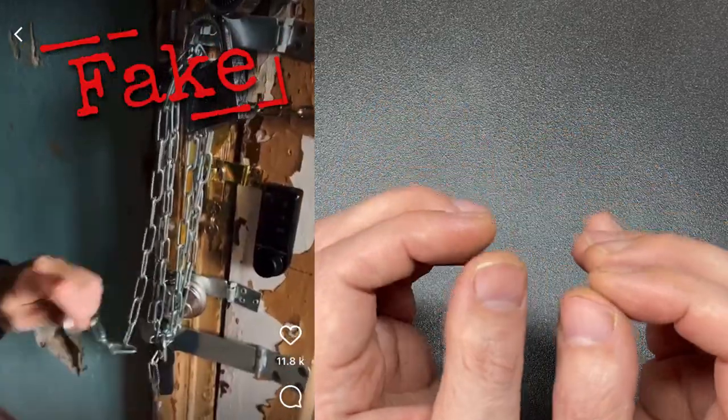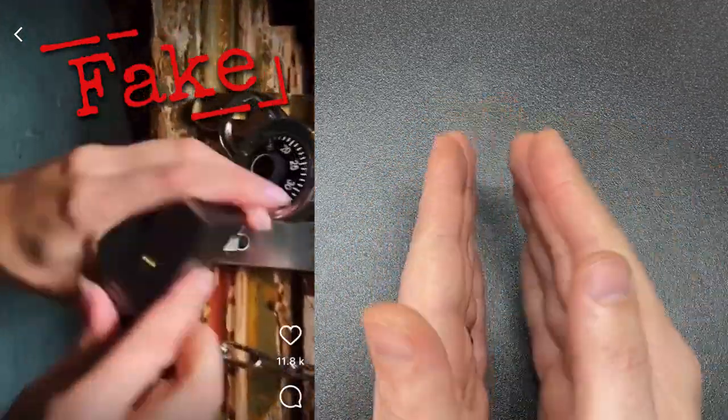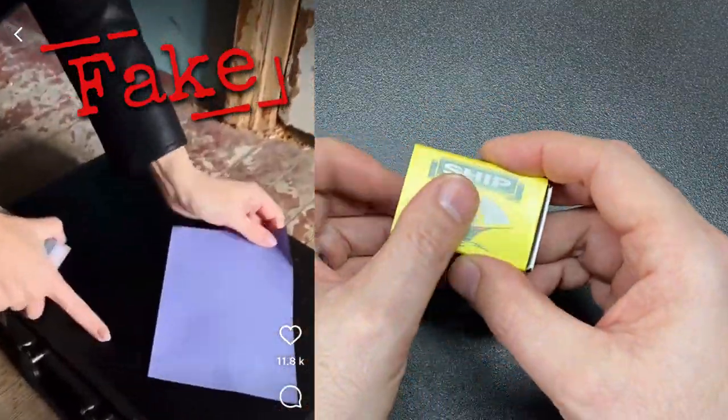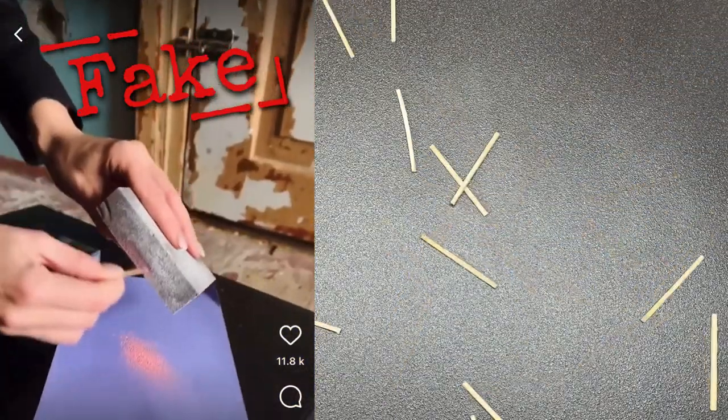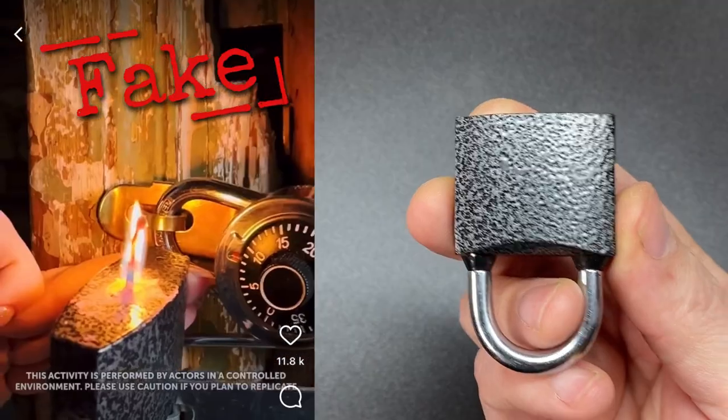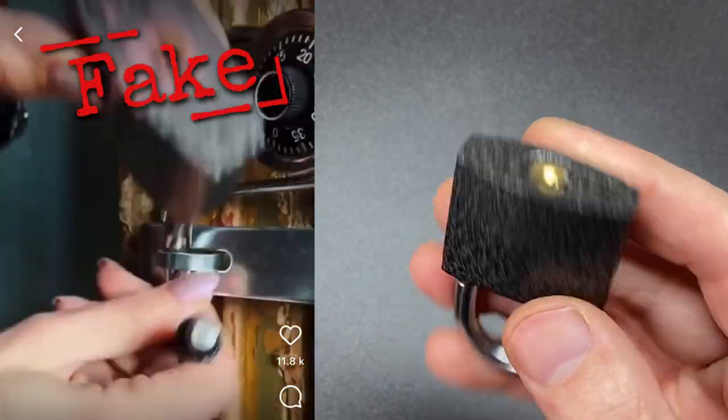So the first thing they do, after unwrapping what seems to be a completely pointless chain affixed to nothing, is they start to take the heads off a box of safety matches. I had to remove the heads of a whole bunch of matches. This left me with a load of match head powder.